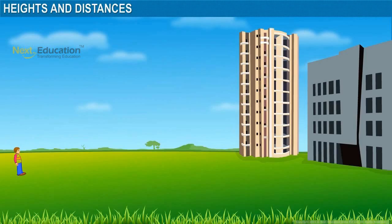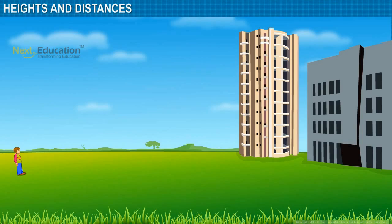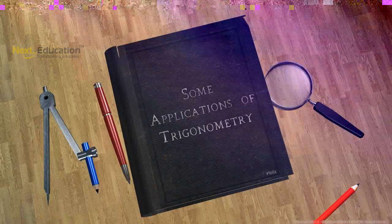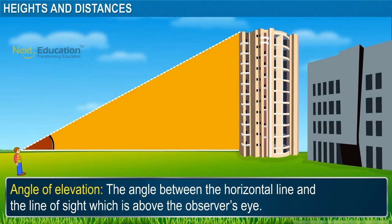Let's review some basic terminology associated with finding heights and distances. Suppose an observer is looking at the top of a tower. The line joining that object and the eye of the observer is called the line of sight. The angle between the horizontal line and the line of sight, which is above the observer's eye, is called the angle of elevation.